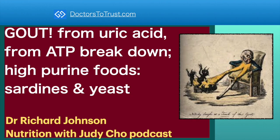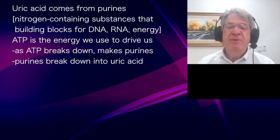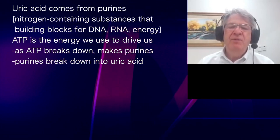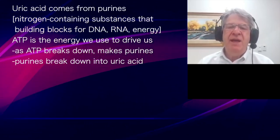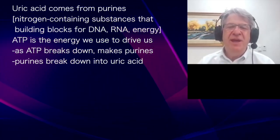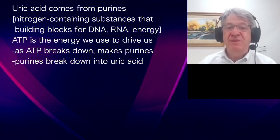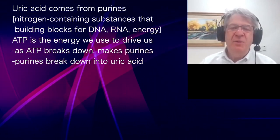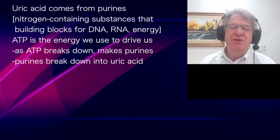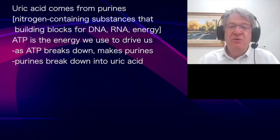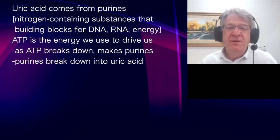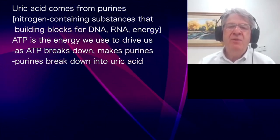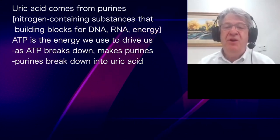Uric acid comes from purines — nitrogen-containing substances used as building blocks for DNA, RNA, and energy. The energy in our body comes from ATP, and we use that energy to drive biological processes like breathing, walking, and thinking. When ATP breaks down, it generates purines that get broken down further to uric acid. Likewise, DNA in the nucleus of our cells and RNA, which drives protein production, also contain purines, and when they get broken down, you make uric acid.